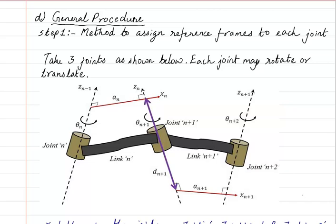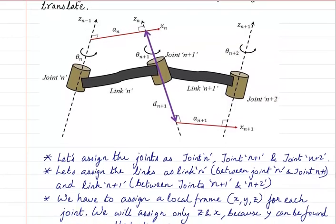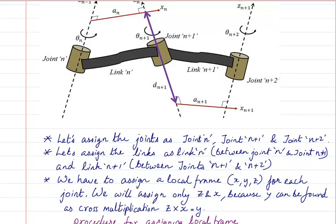Let us summarize step 1 of the general procedure. Here we have 3 joints: joint n, joint n plus 1, and joint n plus 2. There is a link n and link n plus 1 between the joints. We assign the joints as joint n, joint n plus 1, joint n plus 2, and the links as link n between joint n and joint n plus 1, and link n plus 1 between joint n plus 1 and n plus 2.